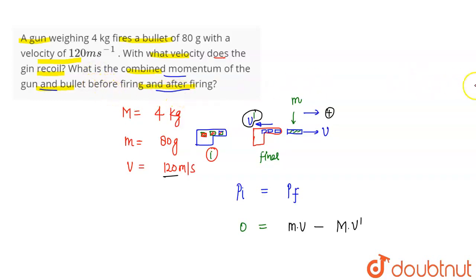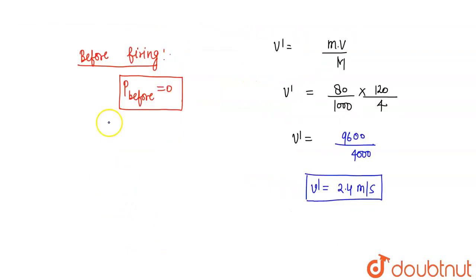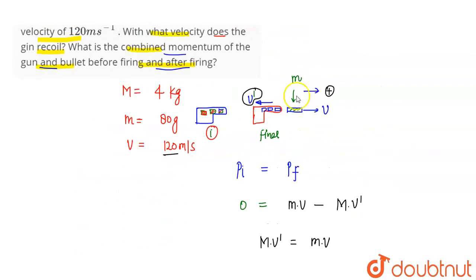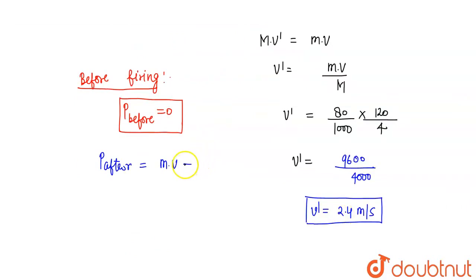After firing: jis moment pe aapne bullet ko fire kiya, bullet bahar nikali hogi. Yah humara after-the-firing waala case hai. Bullet bahar nikali, toh gun peeche ki taraf jayegi — recoil speed. Momentum after the firing: mass of the bullet into velocity of the bullet, minus mass of the gun into v-dash, because gun negative direction mein gayi.